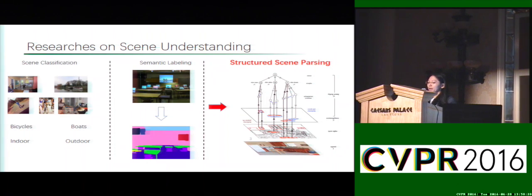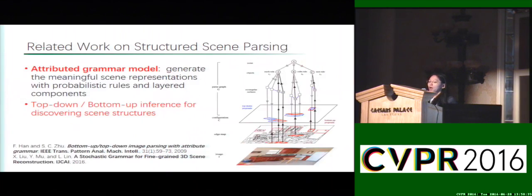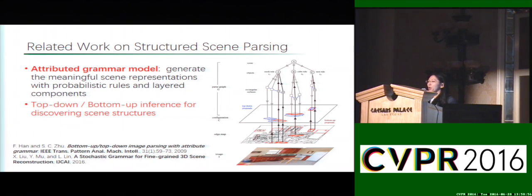It produces a piecewise segmentation for each category as well as their informative structural relations. Structured scene understanding has also been studied previously. Representative works are stochastic attribute grammar models and their extensions, which can use a small number of grammar rules to generate meaningful hierarchical scene representations and integrate bottom-up and top-down inference to discover scene structures.